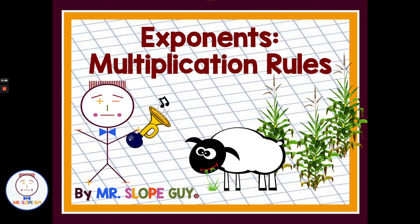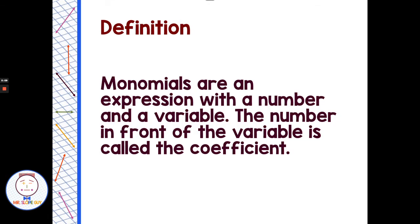Exponents! Today we're going to look at some rules and laws that involve multiplication. Let's start off with some terminology and definitions. Monomials are an expression with a number and a variable. The number in front of the variable is called the coefficient. A monomial could be just a number, just a variable, or a number and a variable. Most of the time when you hear the word coefficient, we're talking about the number in front of the variable.